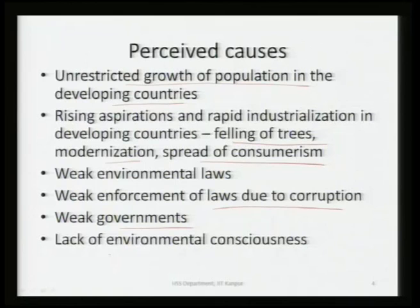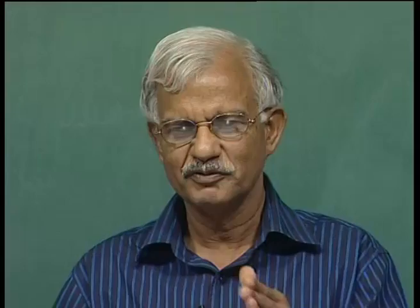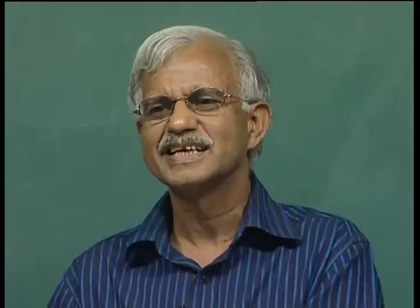There is weak enforcement of laws due to corruption, governments are weak, and there is generally a lack of environmental consciousness — people also do not have the environmental consciousness with which they can force the state or industries. Now, are we talking about developing countries or developed countries? I am talking from the perspective of the developed countries — what they think about developing countries. But these characteristics are very much found in the developed countries as well. So, are they overlooking their own situation? Actually, from our perspective, developed countries want to place blame for environmental or climate change on processes in the developing countries.